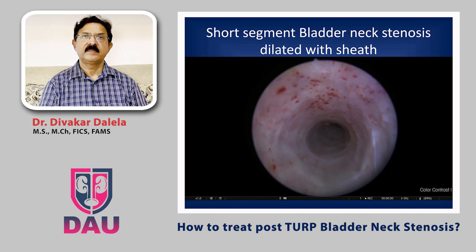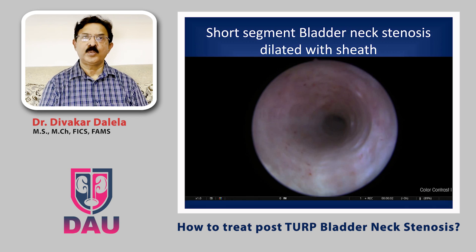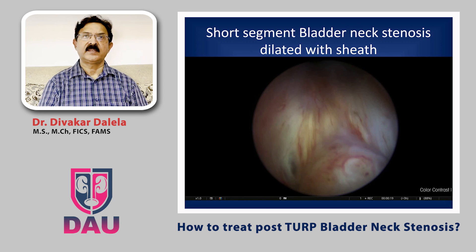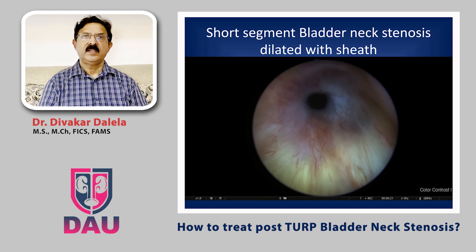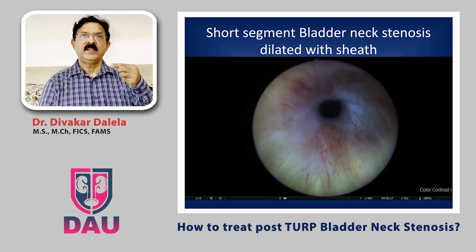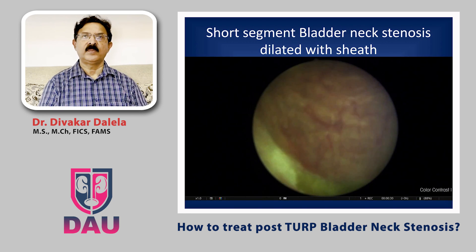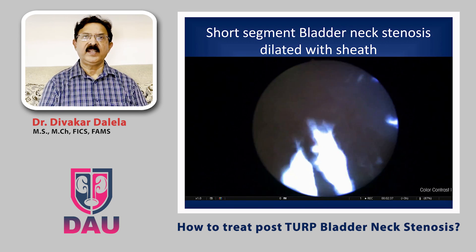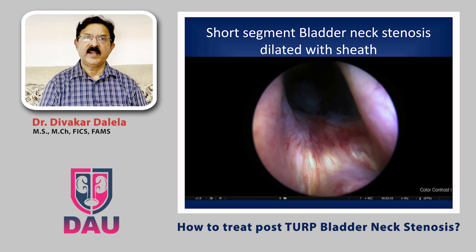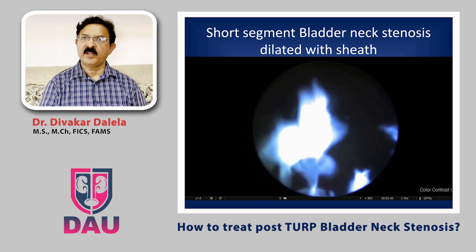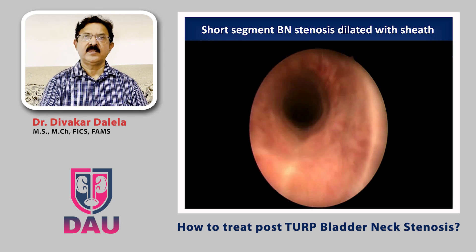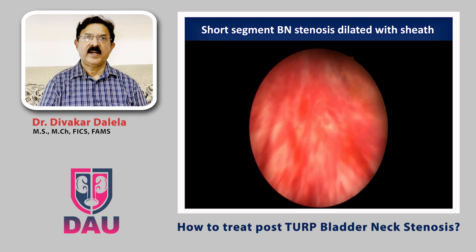This patient has post-TURP bladder outlet obstructive symptoms and as you put your scope inside you will notice a stenosed bladder neck. This is not a very bad case of bladder neck stenosis — it is a thinner septum and as you advance your scope it gets dilated. Look at the thin edges: this is a simple case of bladder neck stenosis with not much fibrotic process. Once dilated, patients do fine.